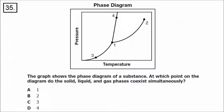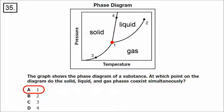Number 35 shows a phase diagram. On the left region, that's a solid. In the middle between the curved lines, that's a liquid. On the far right, that's a gas. At what point do solid, liquid, and gas phases coexist simultaneously? That would be at point one — we call that the triple point.